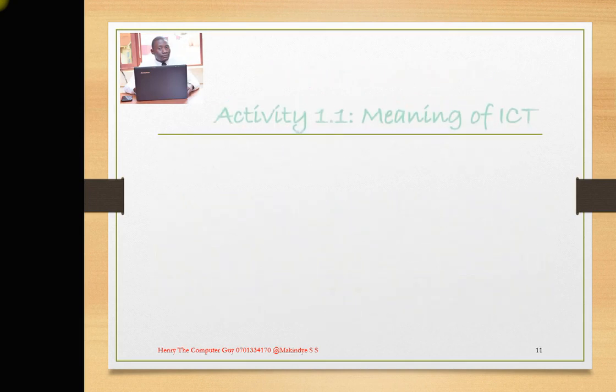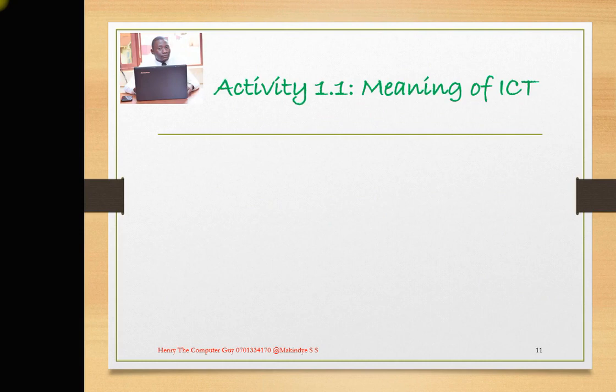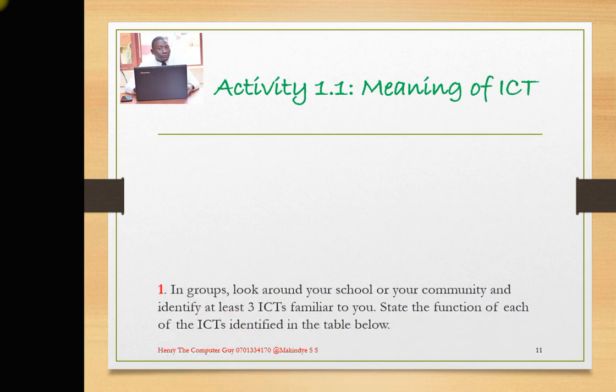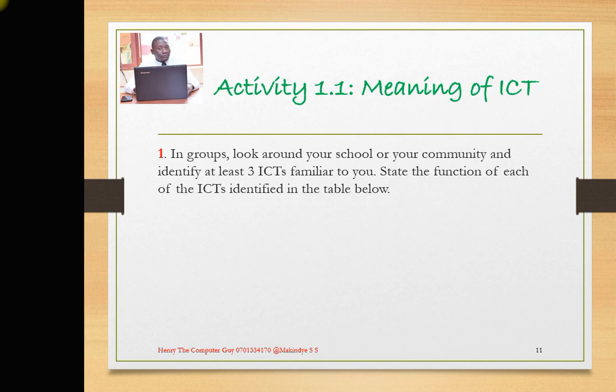We have activity 1.1, which is all about the meaning of ICT. They are telling us that in groups, look around your school or your community and identify at least three ICTs familiar to you. State the function of each of the ICTs identified in the table below.